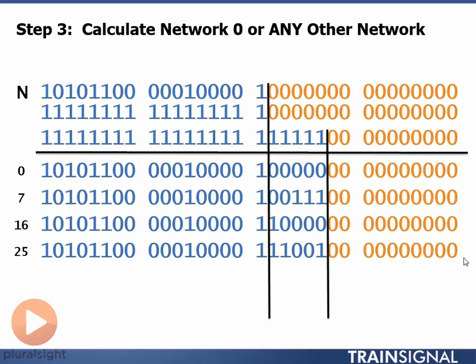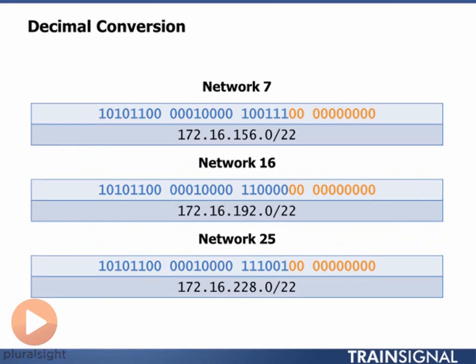Let's break these up into eight bit sections and take a look at our decimal conversion. Network number seven is 172.16.135.0/22, network number 16 is 172.16.192.0/22, and network number 25 is 172.16.228.0/22. Now what's the application of this?